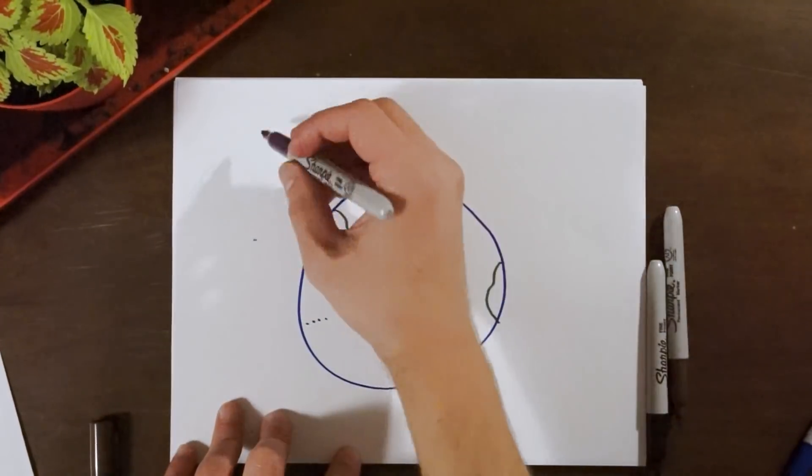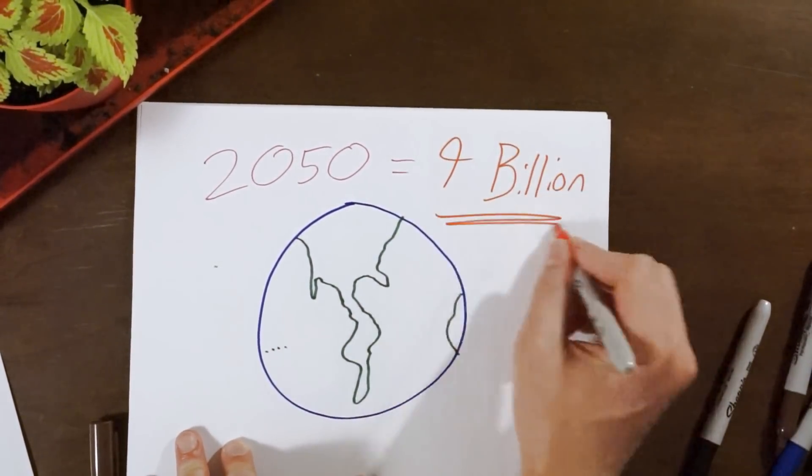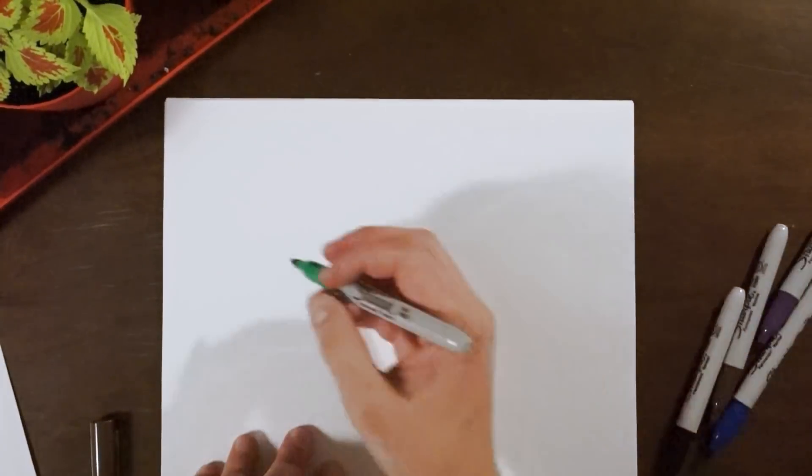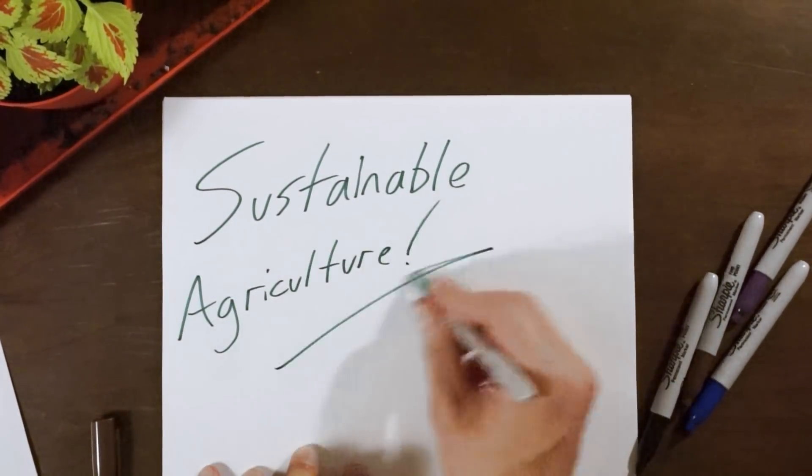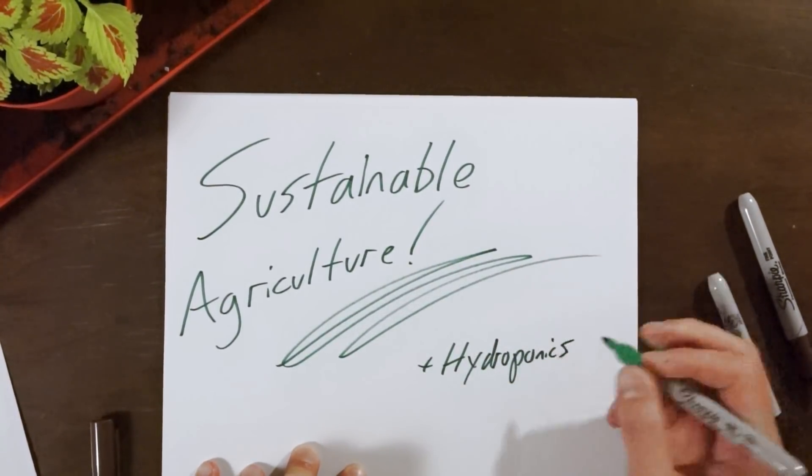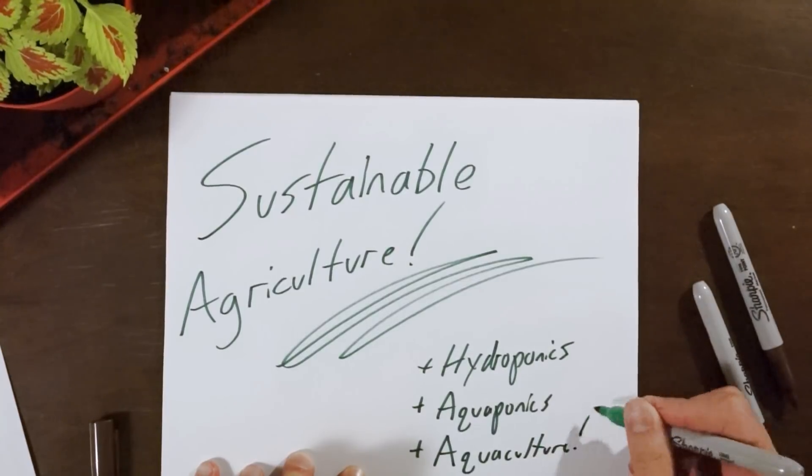By the year 2050, the population is going to be 9 billion people, and that's going to be a lot more mouths to feed. The solution to this problem is definitely going to be sustainable agriculture with the inclusion of the methods hydroponics, aquaponics, and aquaculture. Stay tuned for more and we'll tell you all about it.